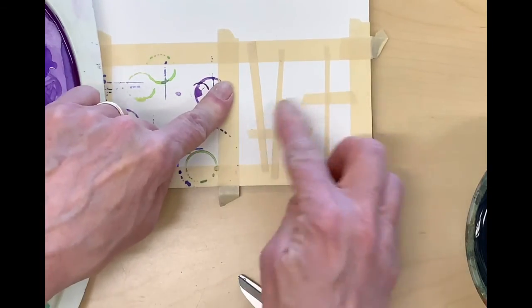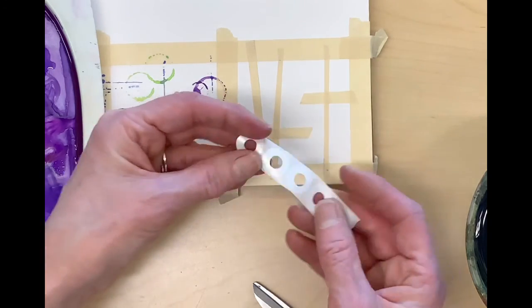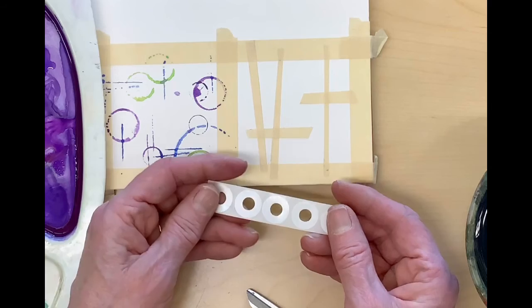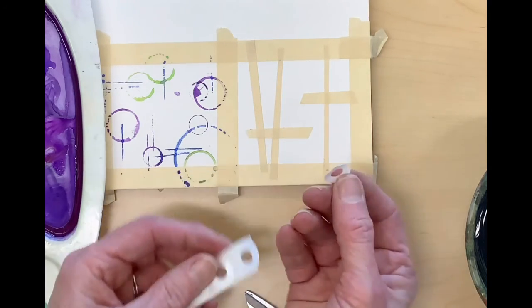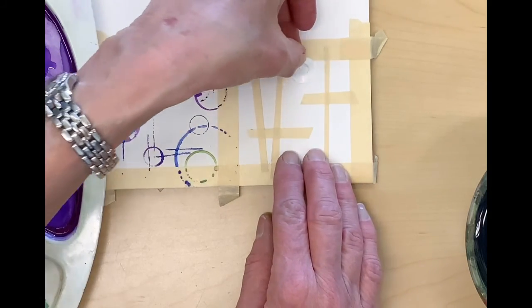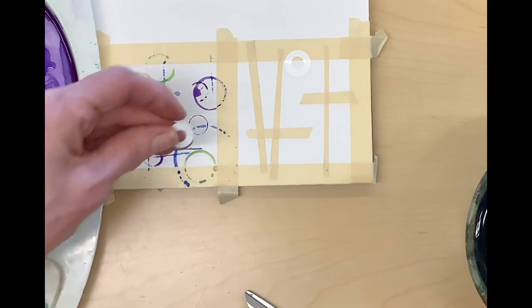Wherever I put the tape, that part of my painting will be white. It will be the color of the paper. I also have these little hole reinforcers that I'm putting on. You can use other kinds of stickers, anything that will stick to it but will also be easy to remove works just fine.